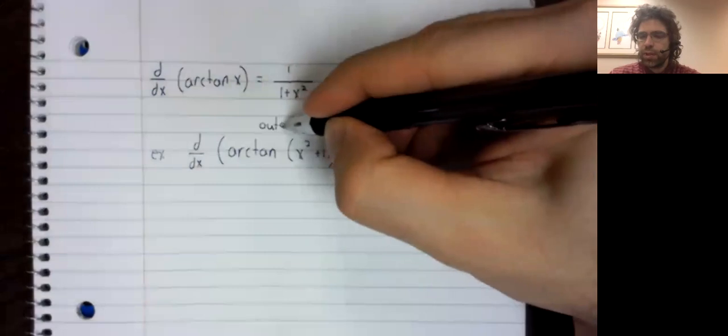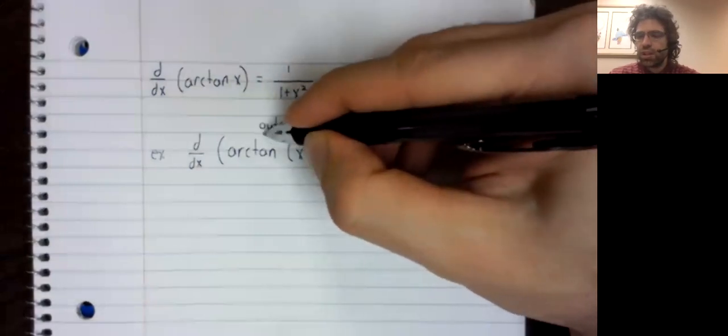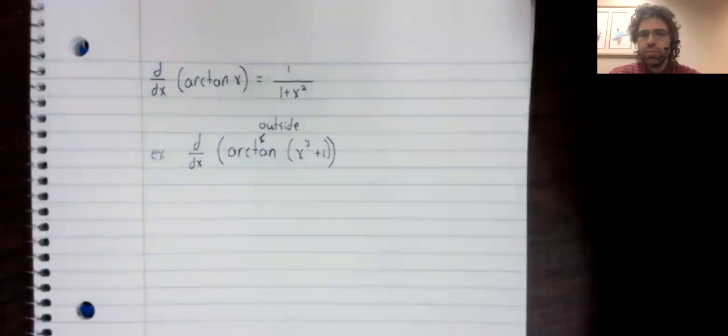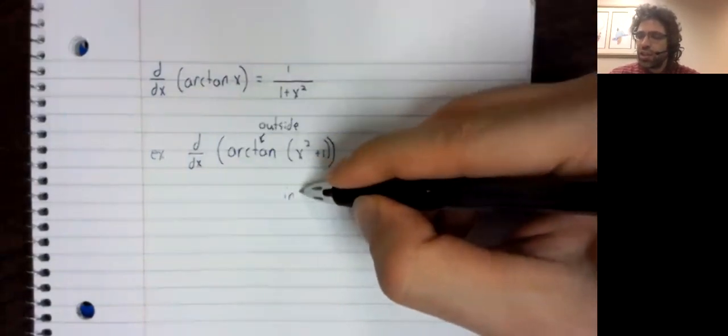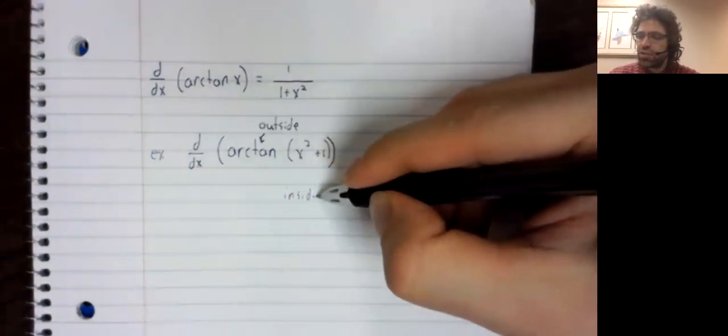So when we have something that looks like this, I already used the phrase chain rule. This is composition.